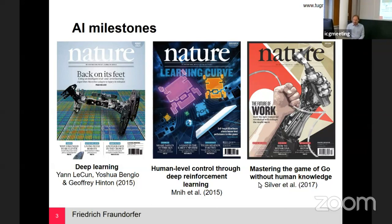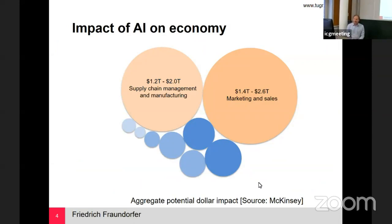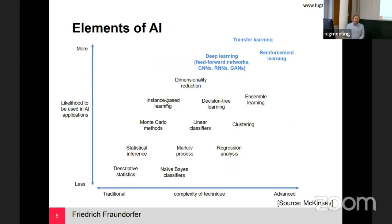These AI achievements have been significant and happened over the last few years, with clear impact on economy and society. A McKinsey study predicts that the impact of AI on the economy can be measured in trillions of dollars — one to two trillion in supply chain management and manufacturing alone. This area includes robotics, and manufacturing will use many more robotic technologies in the future. So for society and economy, these AI developments are really important.